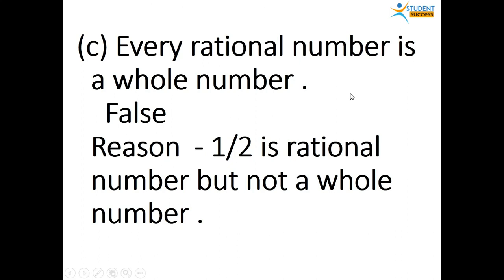Third statement: every rational number is a whole number. Again, this is false. For example, minus 1 upon 2 is a rational number but not a whole number, as it does not belong to the collection of whole numbers. Similarly, 0.5 is not a whole number. So every rational number is not a whole number. However, every whole number is a rational number — for example, 2 can be written as 2 upon 1, and 0 is also a rational number as shown in question 1.